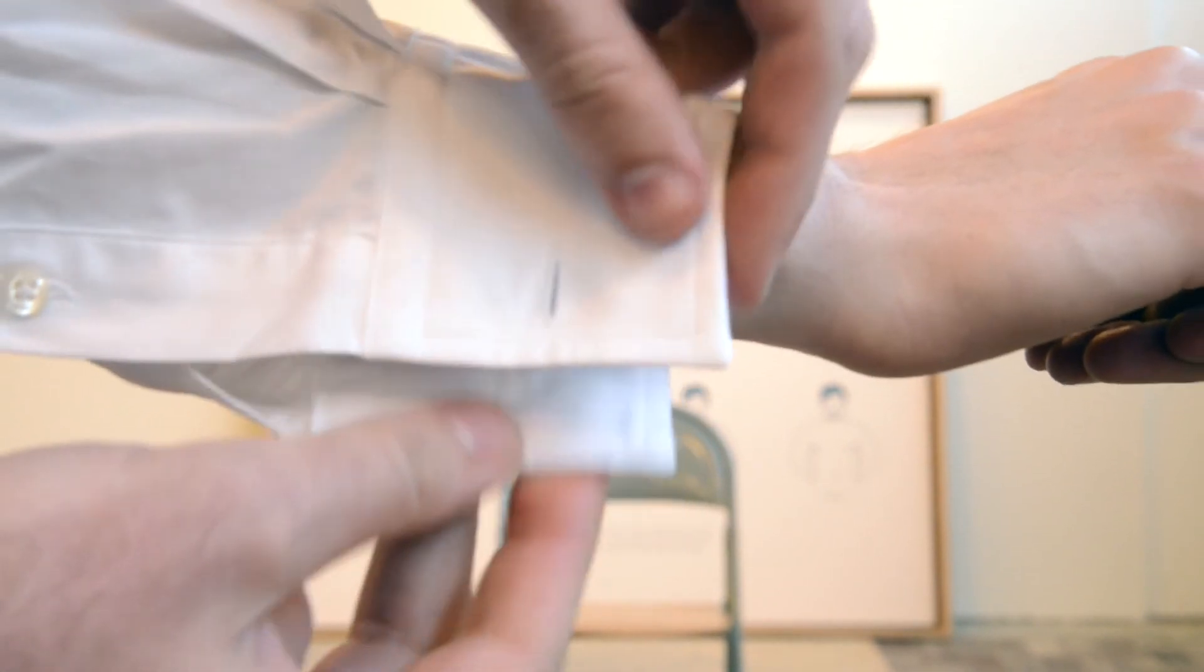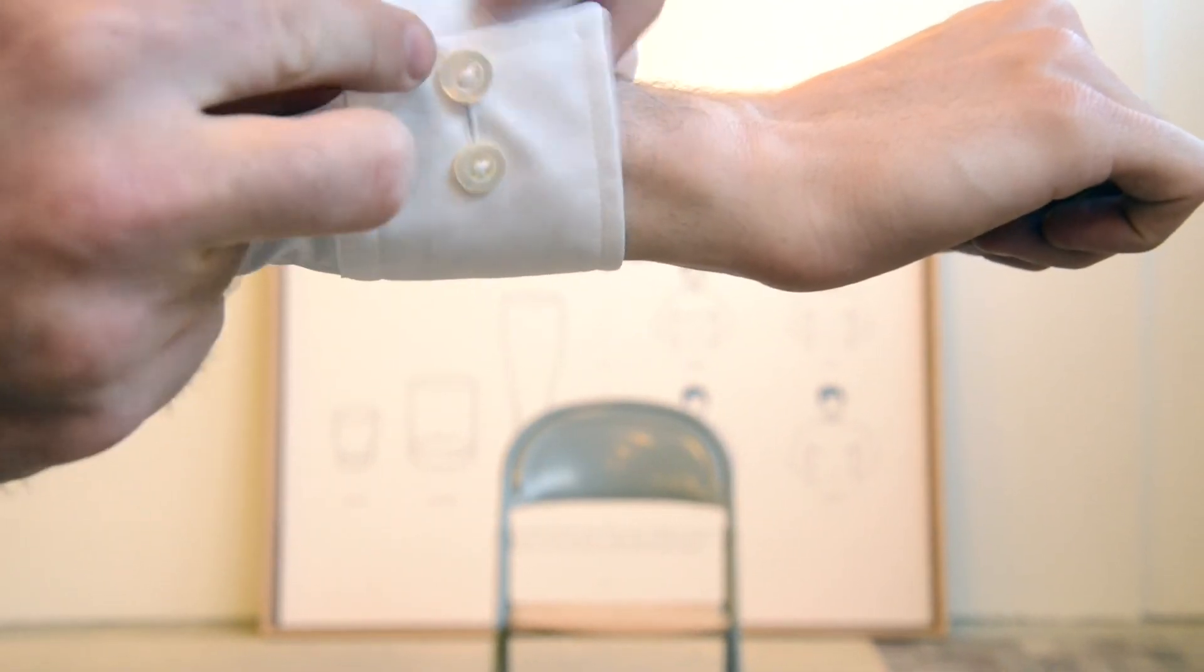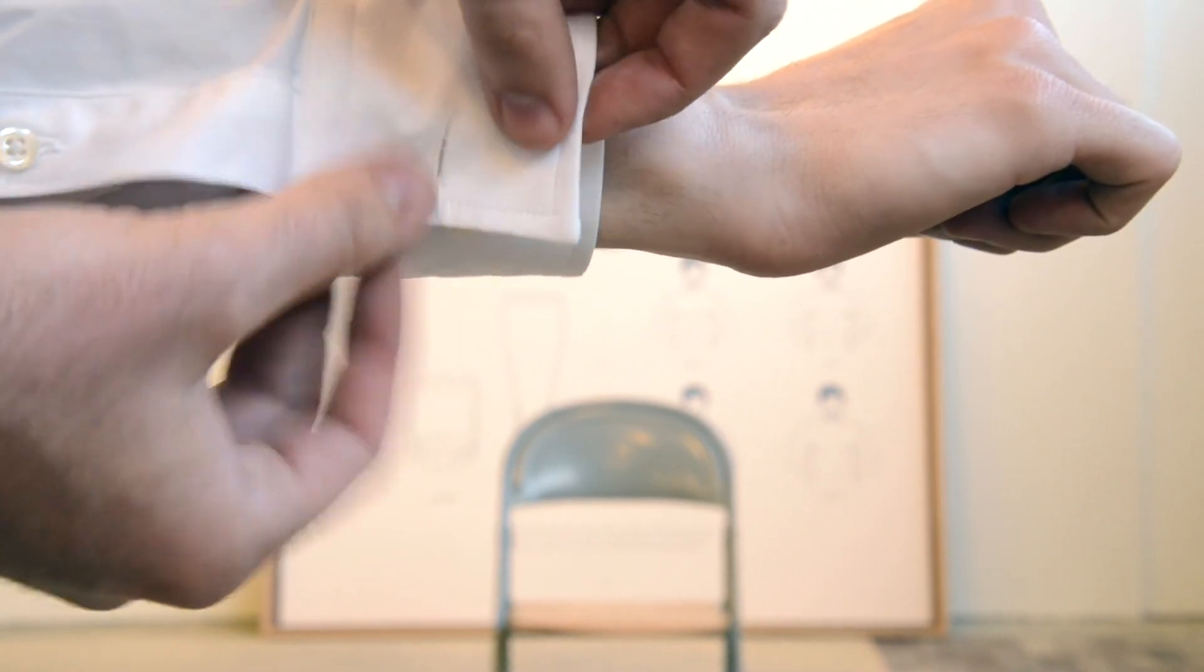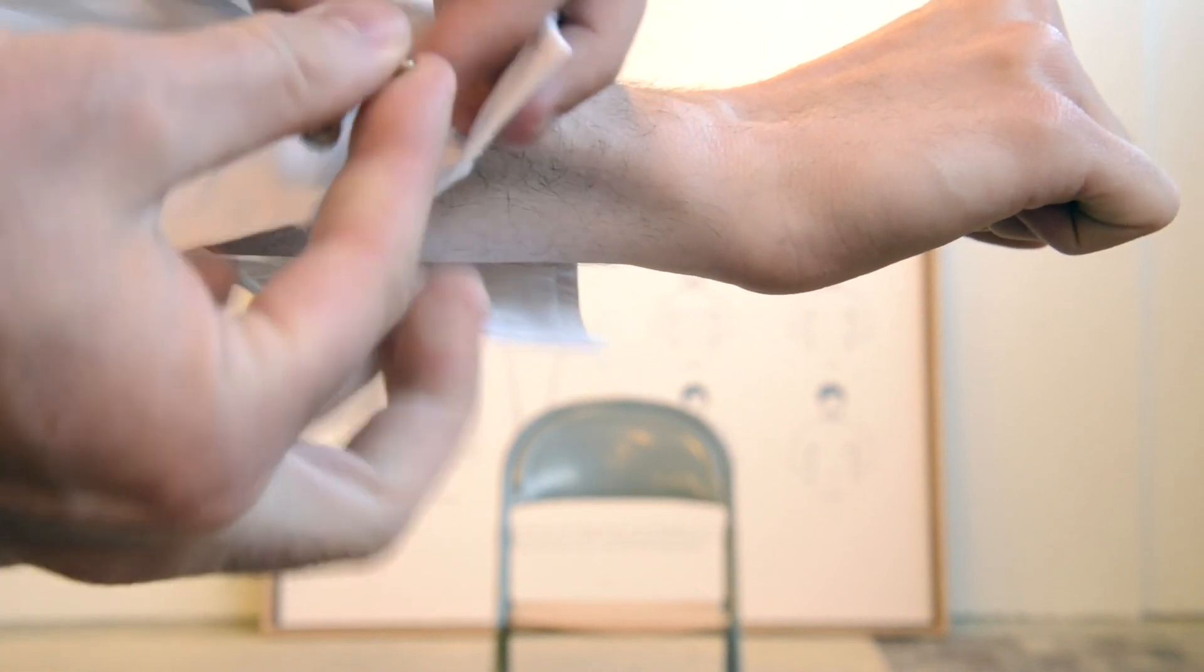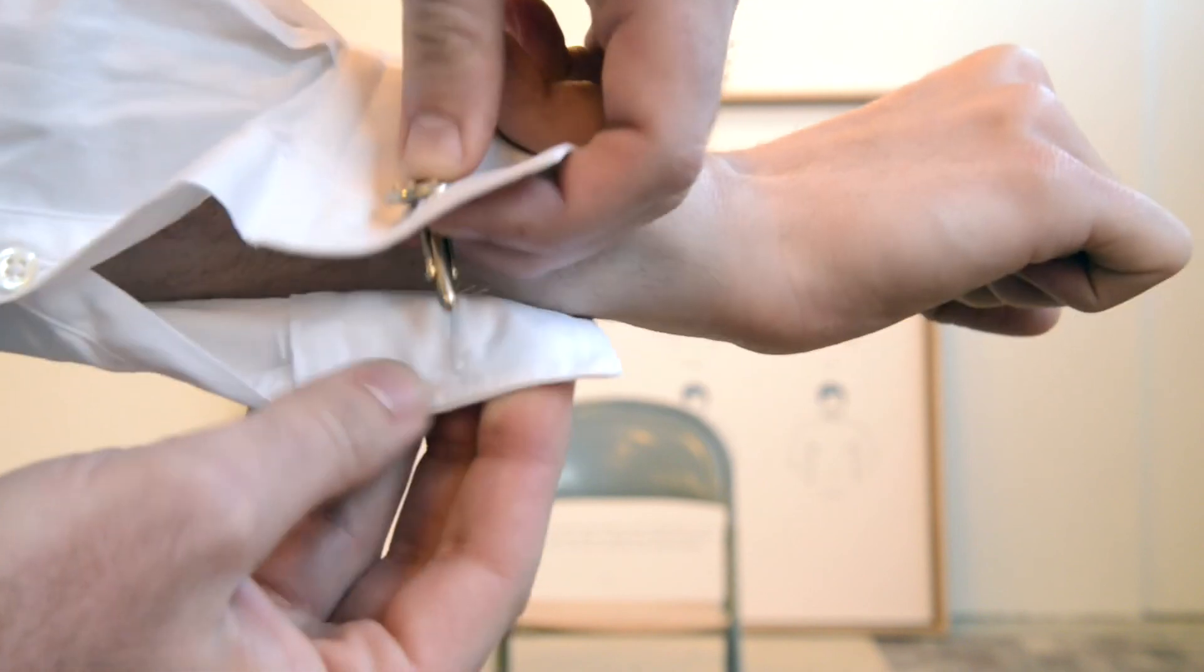So Brandon has the shirt here and it has our double button that's there. So you can always have that buttoned easily like this. But what we're going to do is we're going to throw in a cufflink and you're going to be able to see exactly how it works.